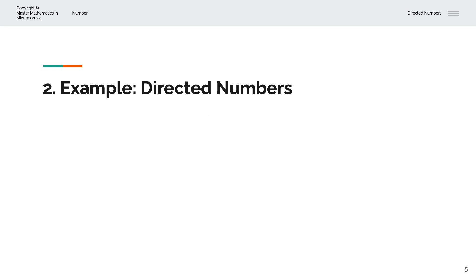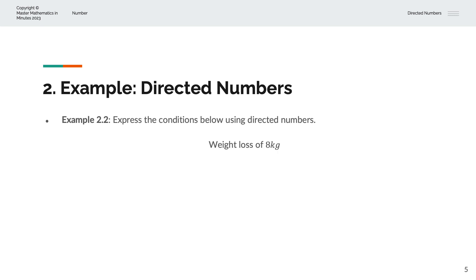In the second example, we're asked to express the conditions below using Directed Numbers. A weight loss of 8 kilograms and a weight gain of 2 kilograms. So the answer is minus 8 kilograms, where the minus represents loss, and positive 2 kilograms, where the positive sign represents a gain.